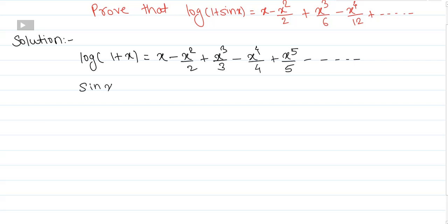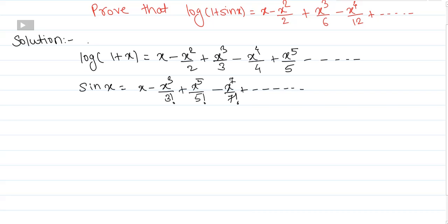The expansion of sin x is: x minus x cubed by 3 factorial plus x raised to 5 by 5 factorial minus x raised to 7 by 7 factorial, plus up to infinity. These are the standard results we have to use.